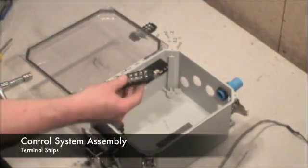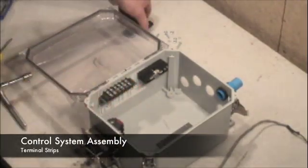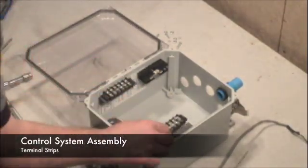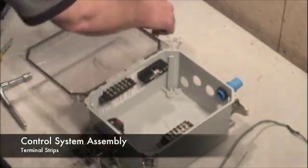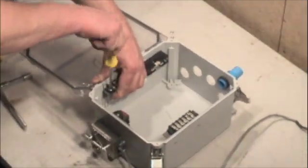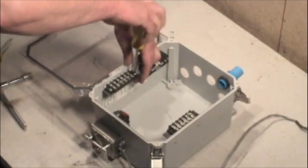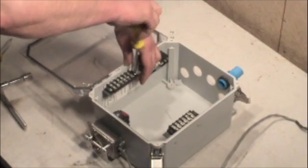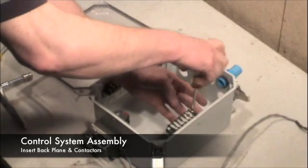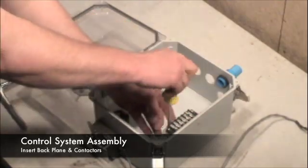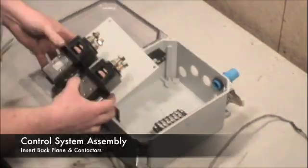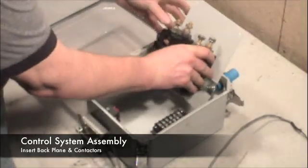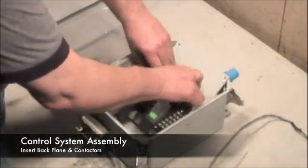The 12-volt control circuit terminal strips install on the pre-mounted angles in pre-drilled hole locations. Once these units are assembled and tightened, we're ready to install the backplane with the previously installed Curtis contactors.